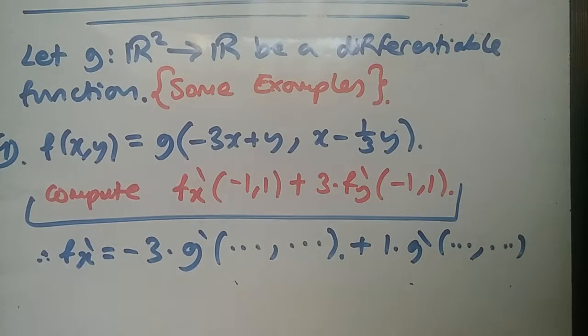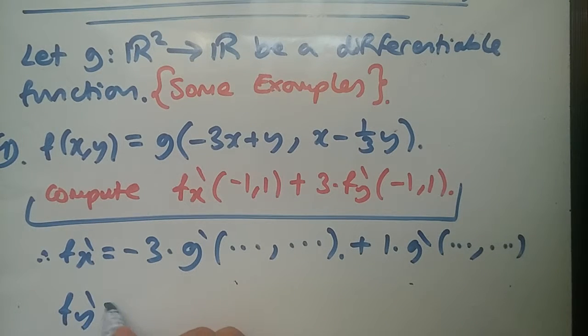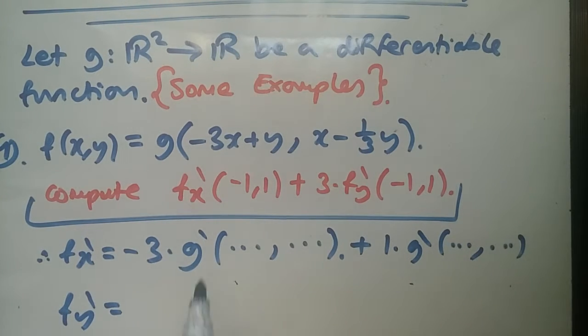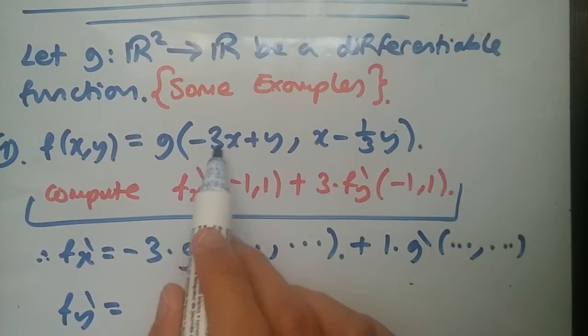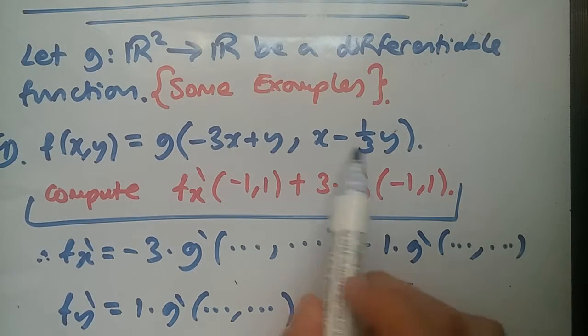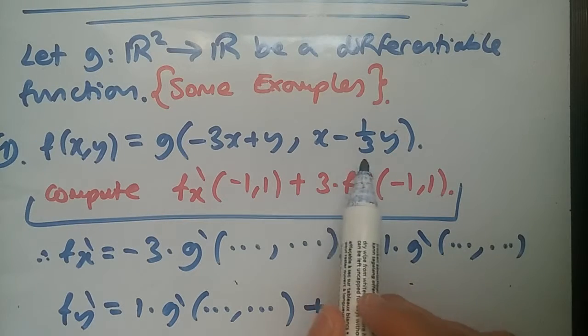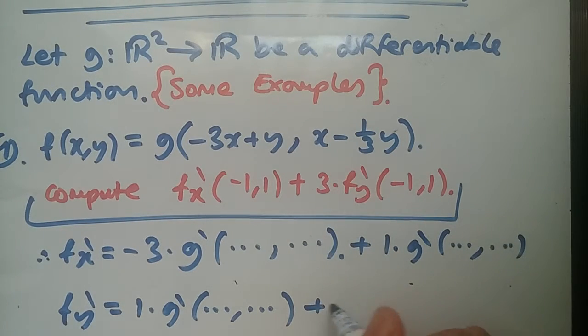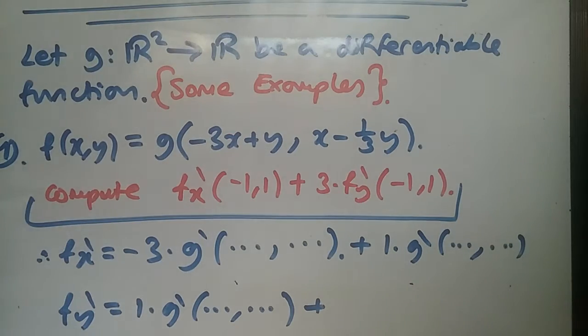Plus now we take the partial derivative of the second part. What would this give us? Well, this would give us 1, so it would just be 1 times g prime dot dot dot. It's actually quite easy. You just take the derivative of the inside part with respect to whatever you're working with.